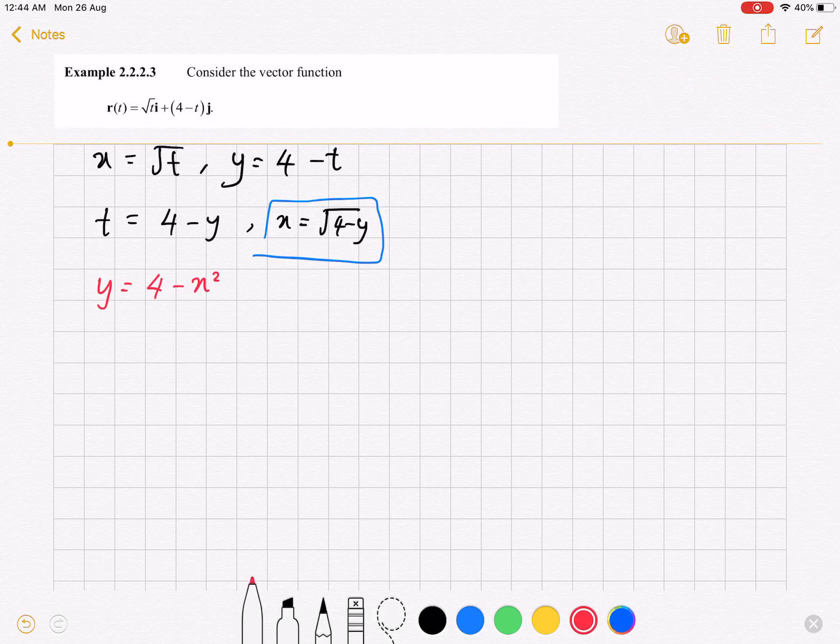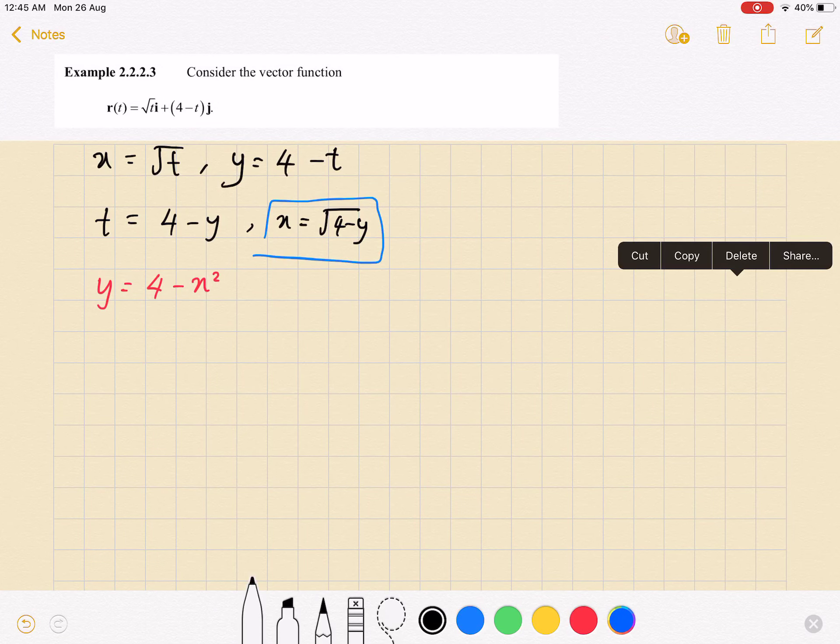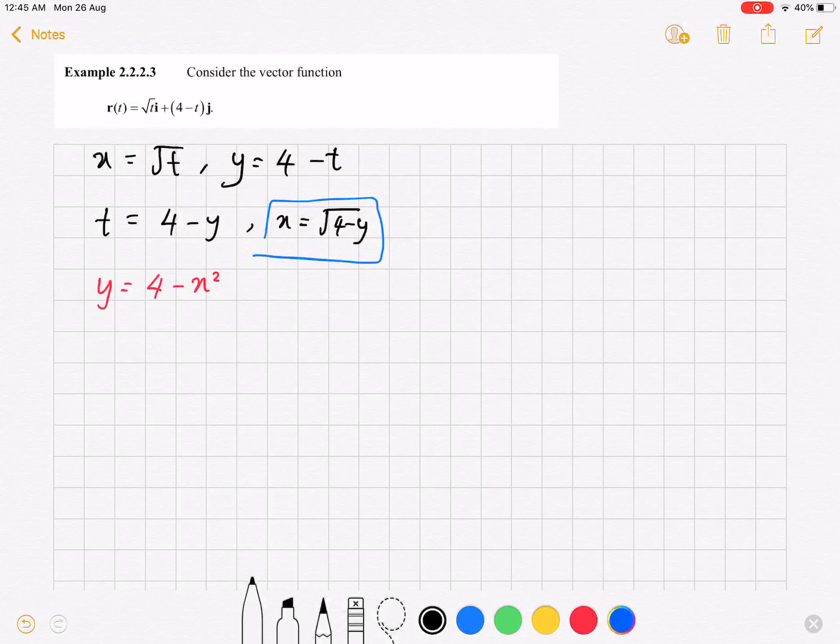So now, we know that this one is a quadratic curve. But then, maybe we recall some information about quadratic equation. Y equals to minus x squared, we will have this kind of graph. And then, how about y equals to 4 minus x squared? It will be shifted up as 4 unit. I use blue pen.